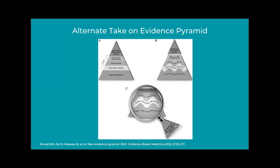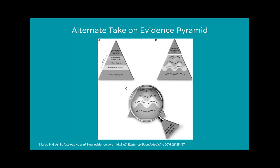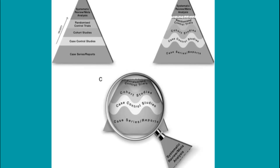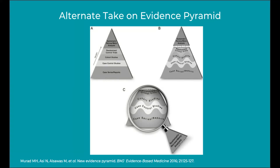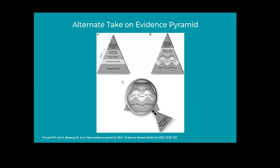Some researchers have thought there could be an alternate view of the hierarchy. You call systematic reviews and meta-analyses filtered literature sometimes, and that's because they take a whole bunch of other studies and try to derive some very systematic conclusions from them. So with this model, they've taken the top off of the pyramid and made it into a lens, and that's to signify that these types of high-level evidence are really like lenses that you use to view randomized control trials or other types of studies very closely. If some first years don't know all the nitty-gritty about systematic reviews and meta-analyses, don't worry about that.